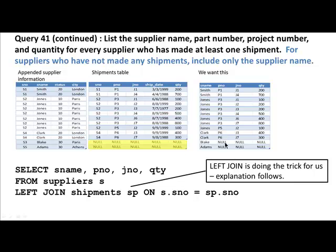Here in the output we are seeing lots of nulls. As explained earlier, null means there is no value. Blake and Adams have not made any shipments, and therefore there is no part number, project number, and quantity for Blake and Adams. These values are null values — not blank, not zero, just null. There is no value for that.